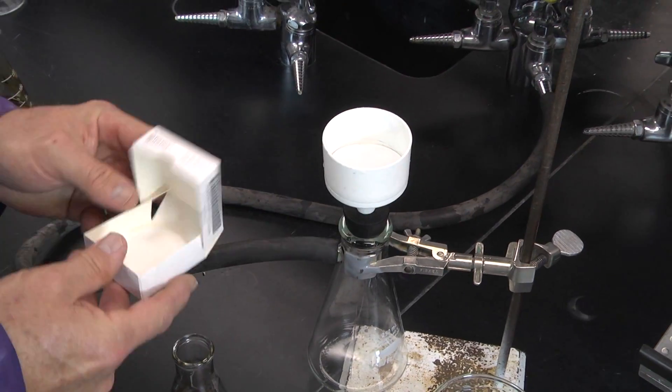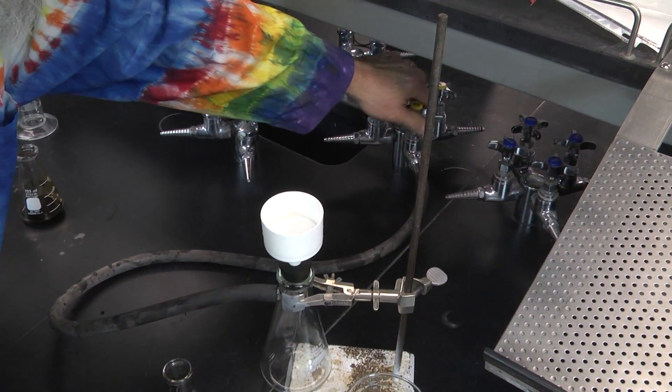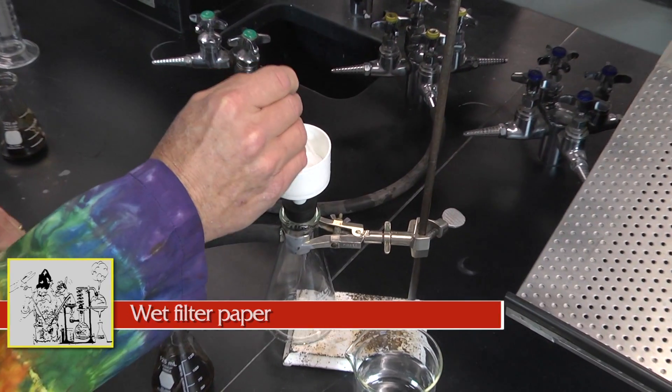Put a piece of filter paper in the funnel and begin drawing air through it. Wet the filter paper to help it seal against the funnel.